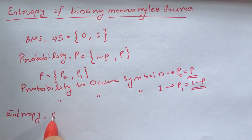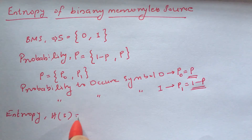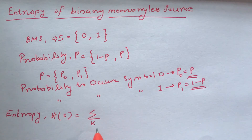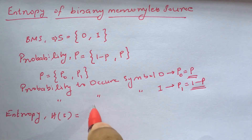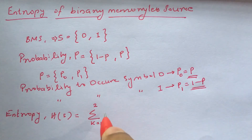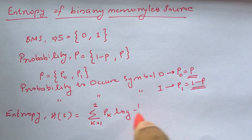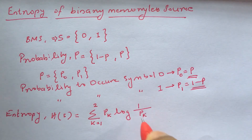H of S is equal to sigma, k equals 1 to the total number of symbols — 2 symbols — of p_k times log base 2 of 1 by p_k.